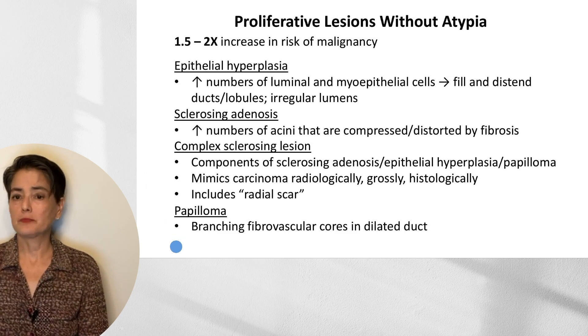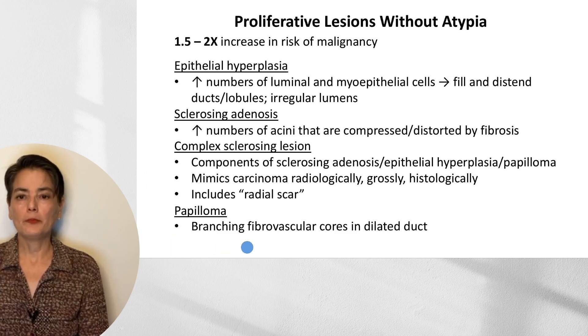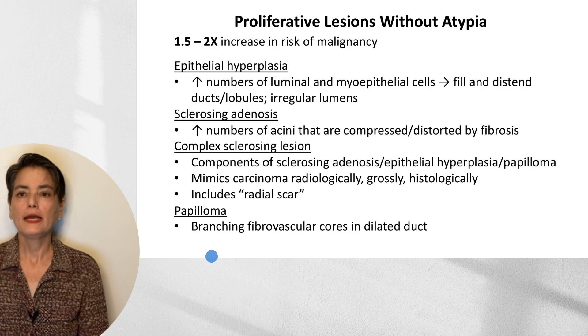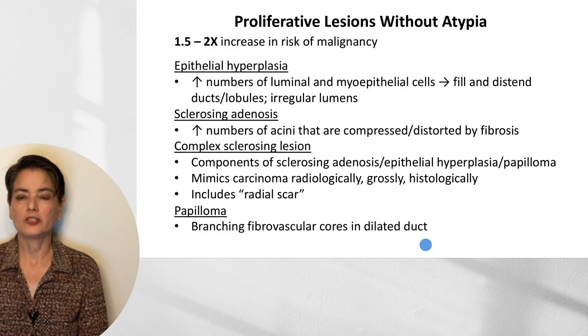The final entity is papilloma. Like all papillomas, it has branching fibrovascular cores lined by epithelium. In the breast, they tend to arise in ducts, which they then dilate due to blockage.